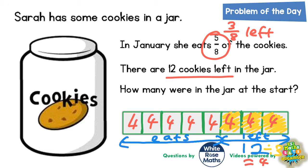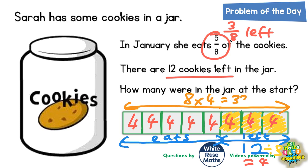Now we're almost ready to answer the final question: how many cookies were in the jar at the start? Well, at the start there were all the ones that she went on to eat plus all the ones that she left — in other words, the whole bar. The bar's got 8 sections in it and each section's worth 4, so it's 8 lots of 4, which is 32 cookies. At the start, before she ate anything, there were 32 cookies in the jar.